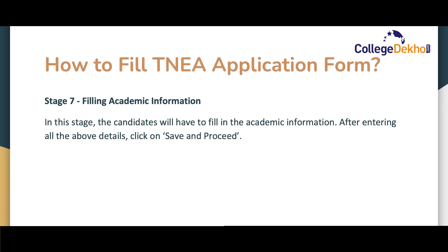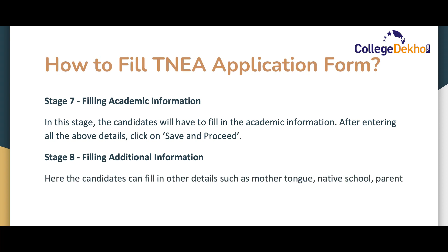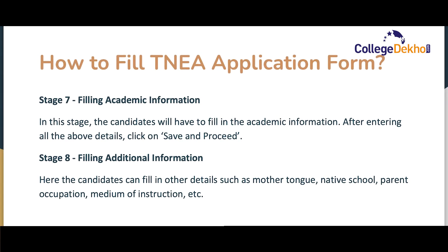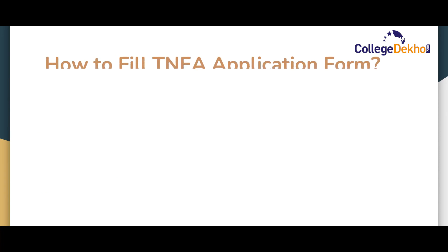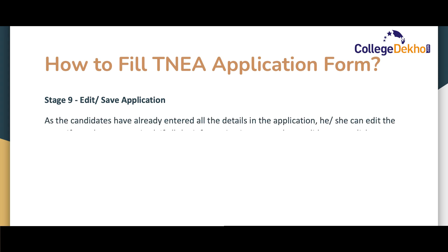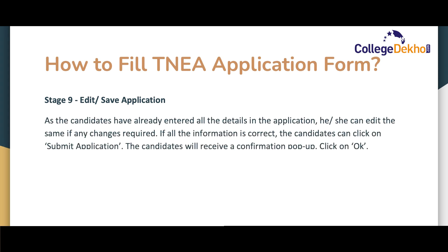The next step is filling academic information, where candidates will have to fill in the academic details, then click on 'Save and Proceed'. Step 8 is filling additional information, where candidates will have to fill in other details such as mother tongue, native school, parent occupation, medium of instruction, and other details. Step 9 is for editing or saving the application form. If any changes are required, the candidate can edit the form. If all information is correct, the candidate can click on 'Submit Application' and confirm by clicking OK on the confirmation pop-up.